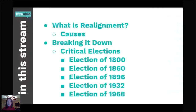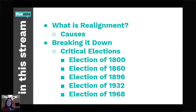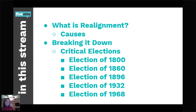So this is what we're going to get into today. We're going to talk about first, what is realignment? We're also going to talk about de-alignment — they kind of go hand in hand. We'll talk about what causes it and why it occurs. Then we're going to break it down by looking at a bunch of critical elections: 1800, 1860, 1896, 1932, and 1964/1968. We're going to cover why those elections are seen as being so critical.